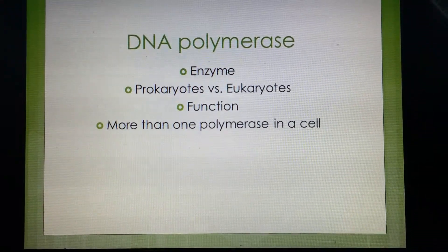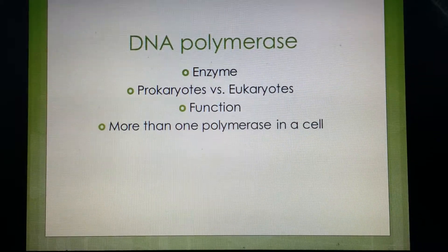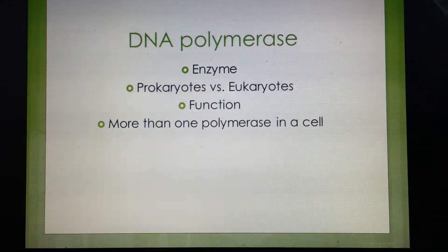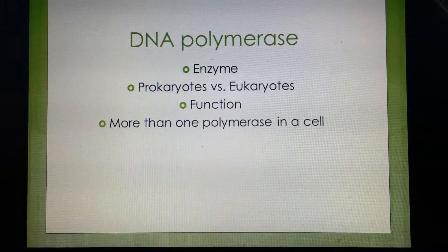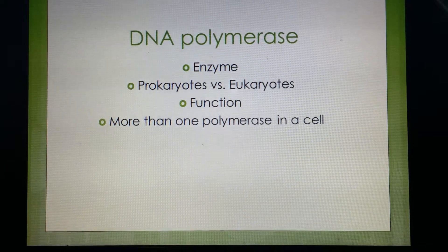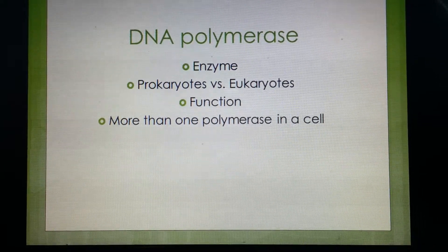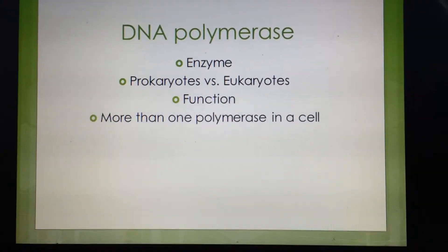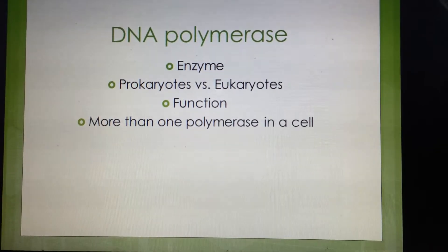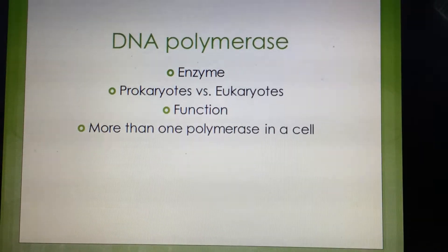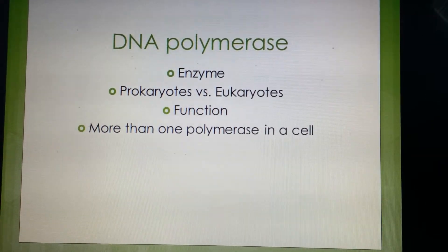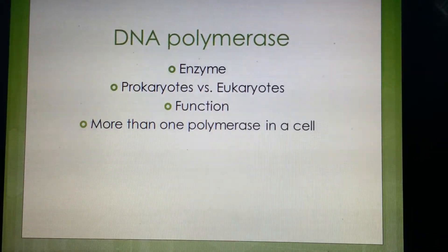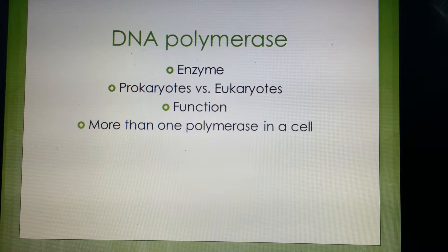Moving on to DNA polymerase. DNA polymerase is an enzyme, and what an enzyme does is speed up a reaction by making or breaking bonds. DNA polymerase is found in both prokaryotes and eukaryotes, and in both types of organisms it replicates genetic material in order to synthesize DNA. Not only does it synthesize DNA, but it also can repair the DNA as well.